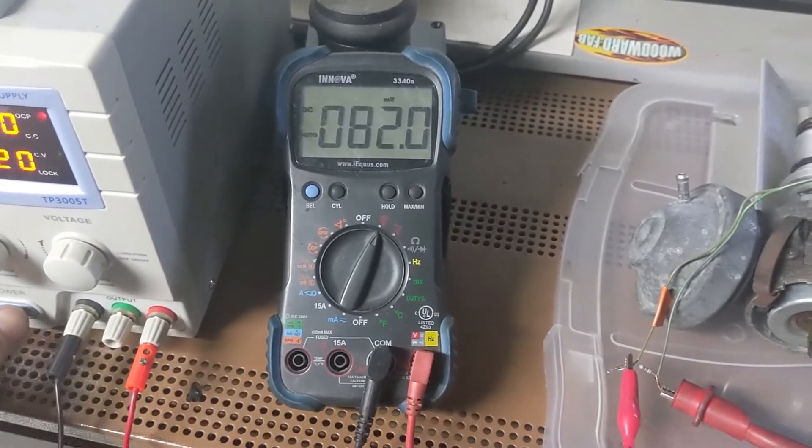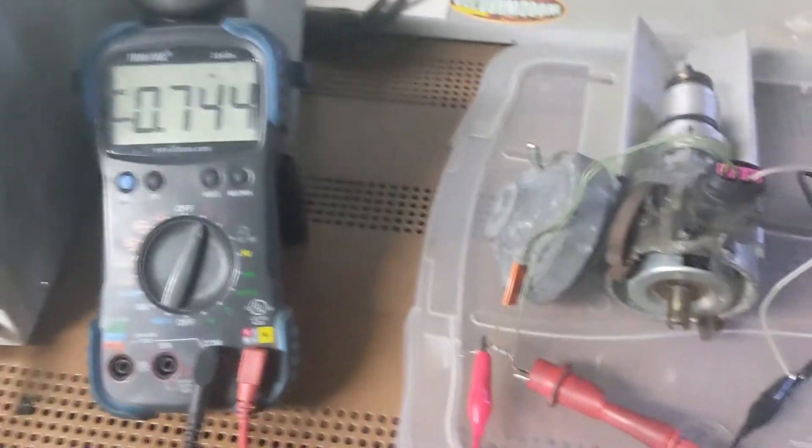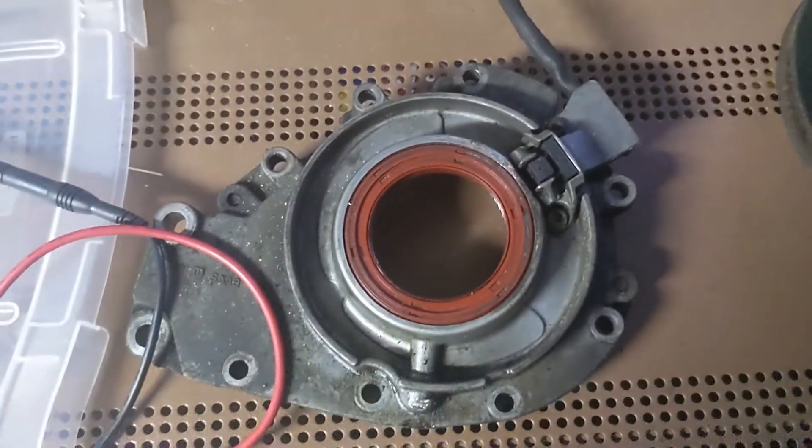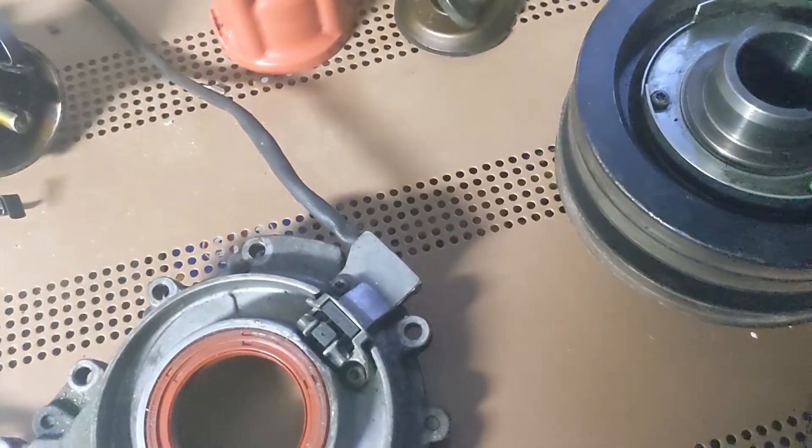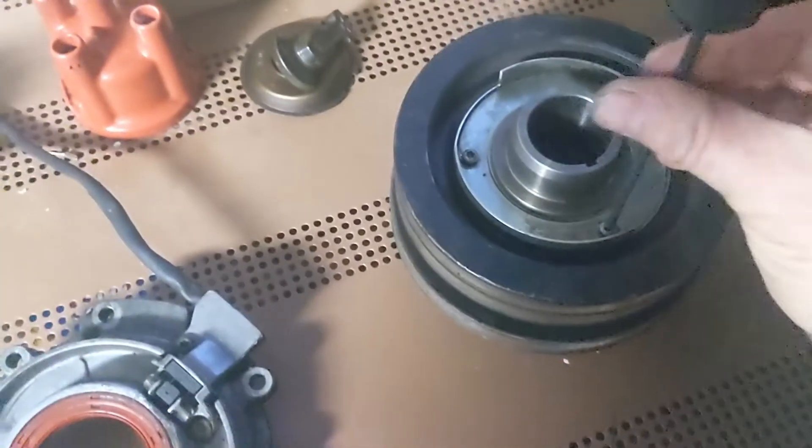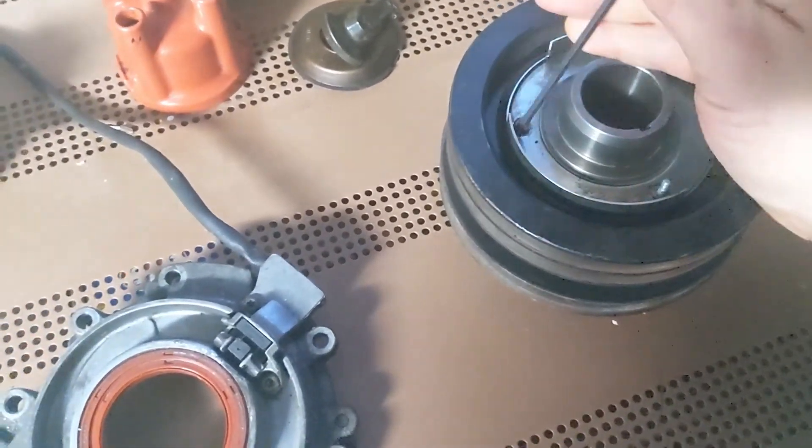So let's look at how this works with a crank position sensor. I'm going to turn my power supply off just for safety. So the crank position sensor works just about exactly the same. Just to make this easy, I'm going to go ahead and remove the aperture disc.